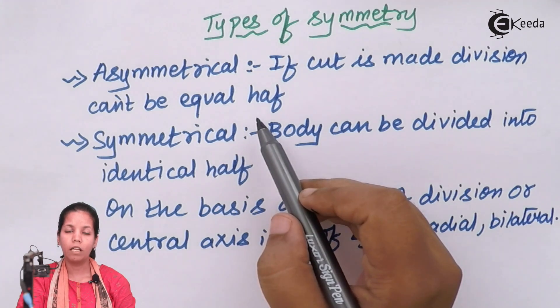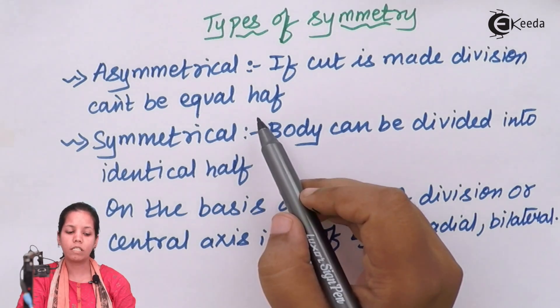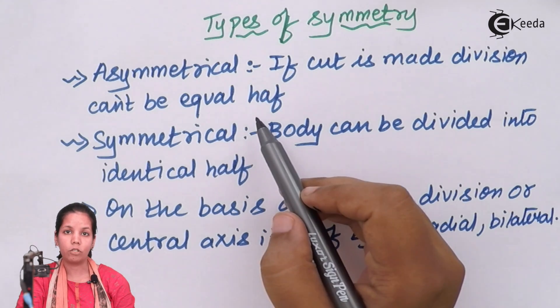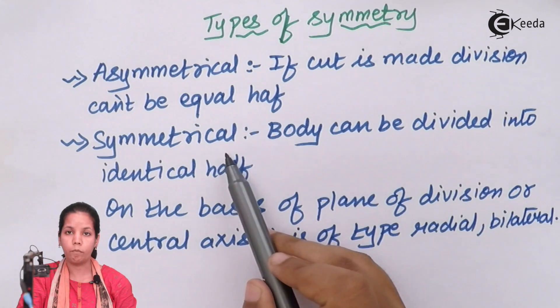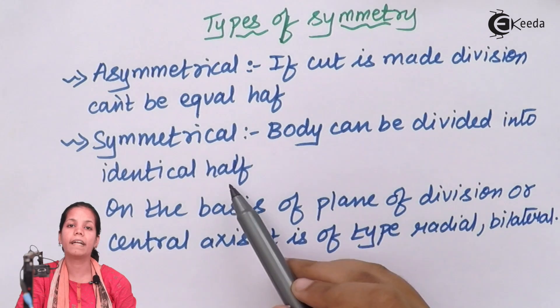And if you compare it with a human, if you make proper divisions, you could do proper symmetry into two equal halves. So symmetrical objects have bodies that can be divided into identical halves.